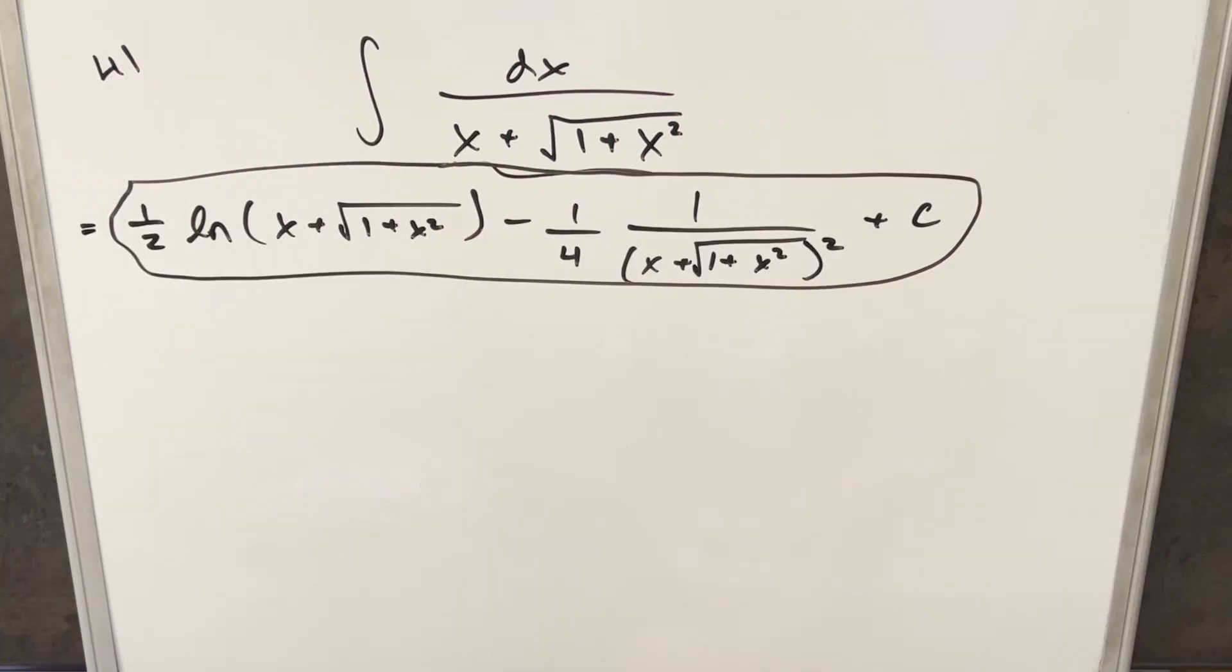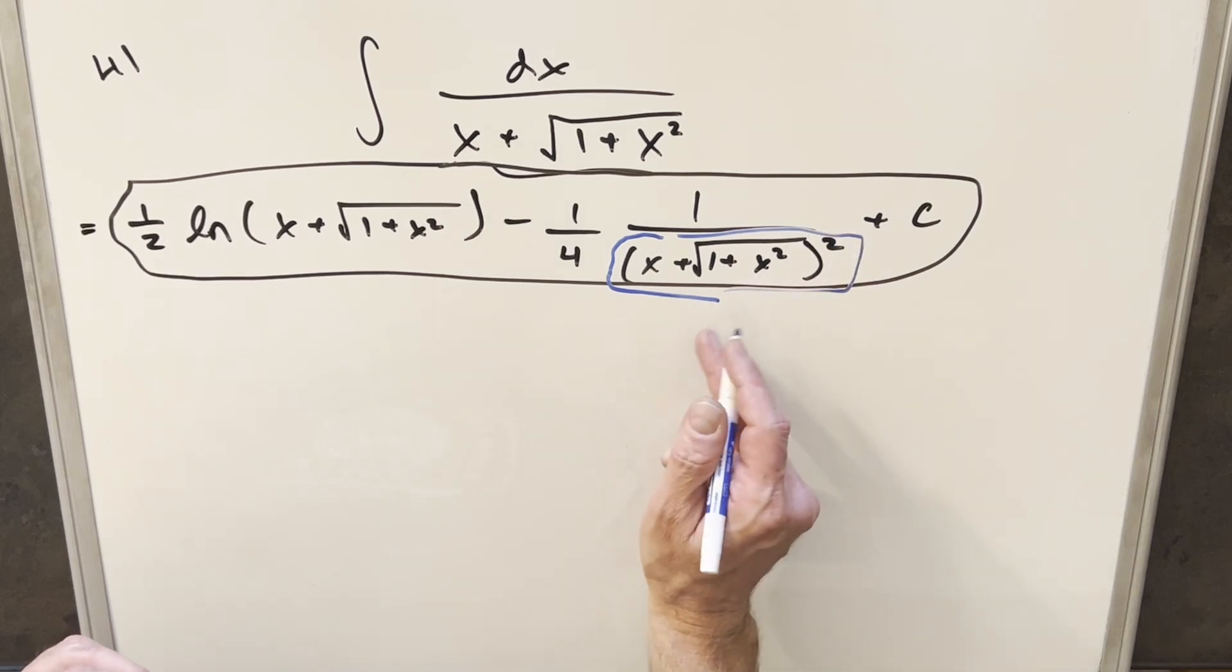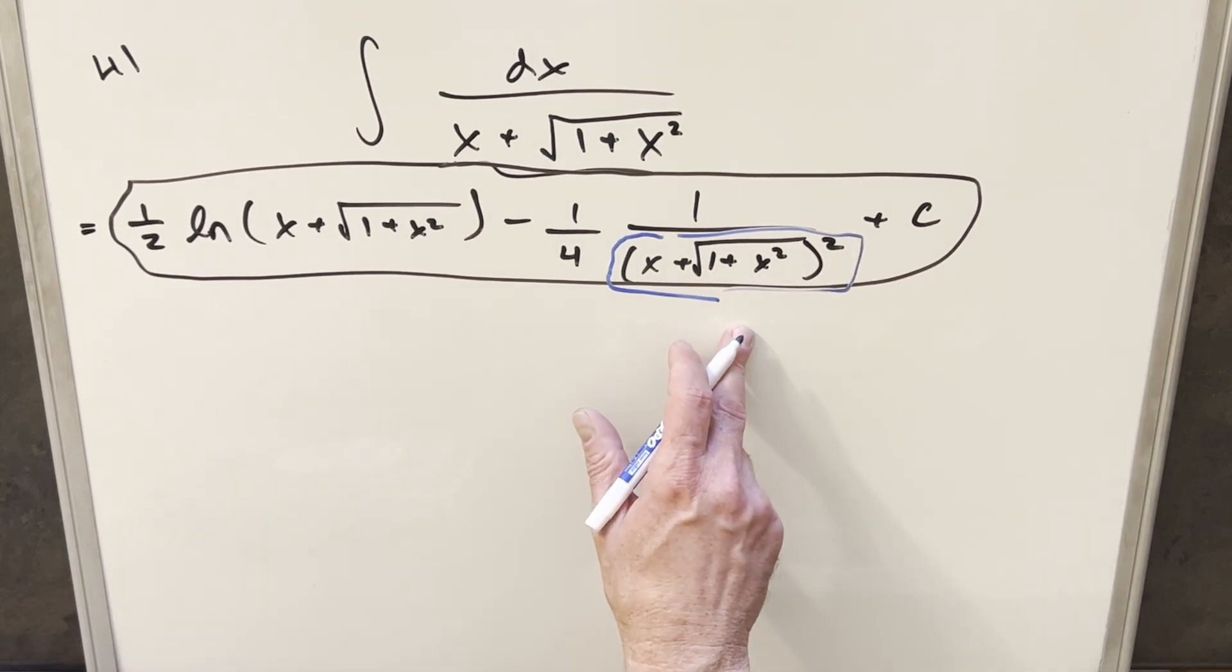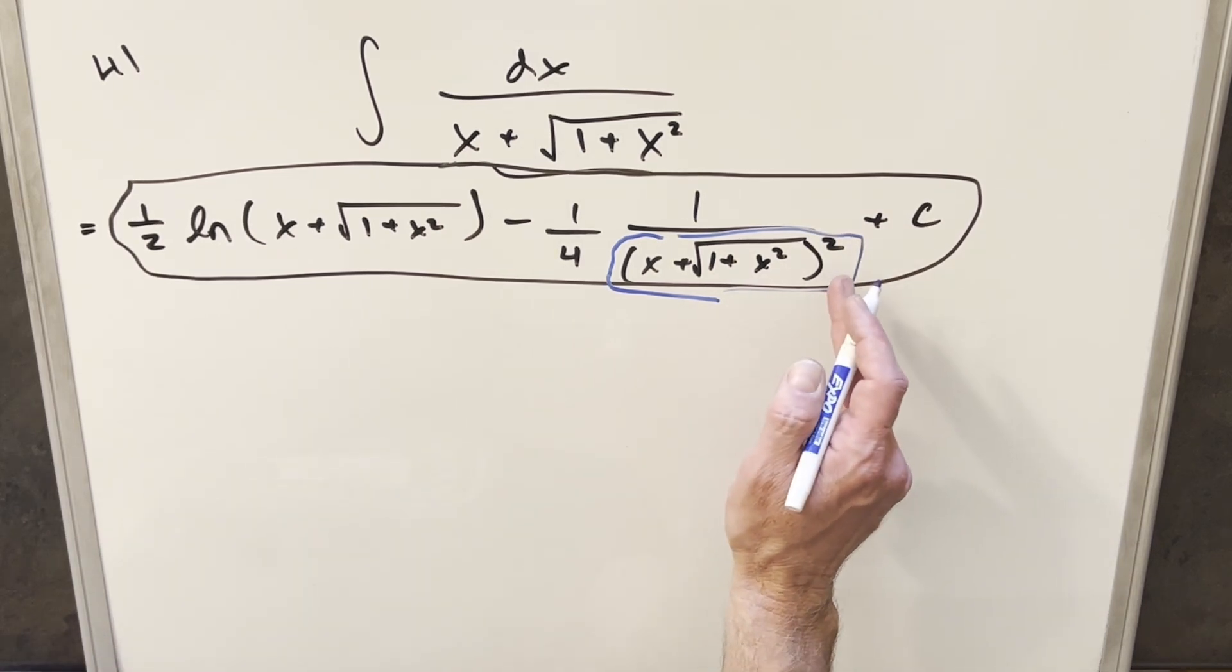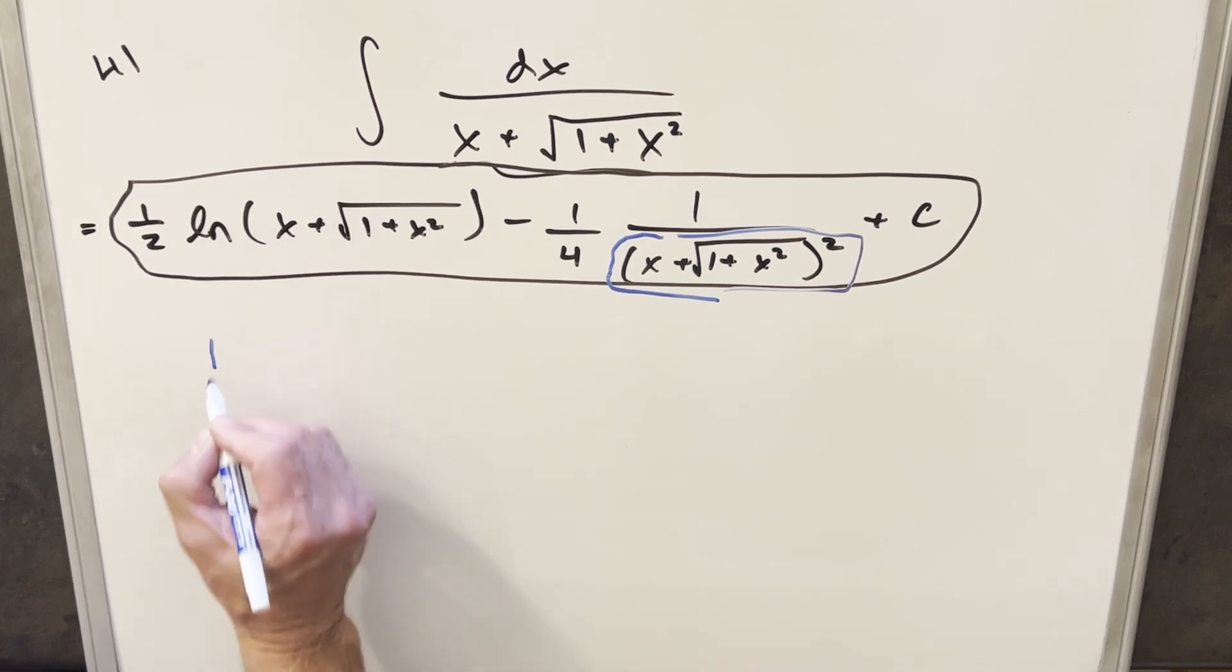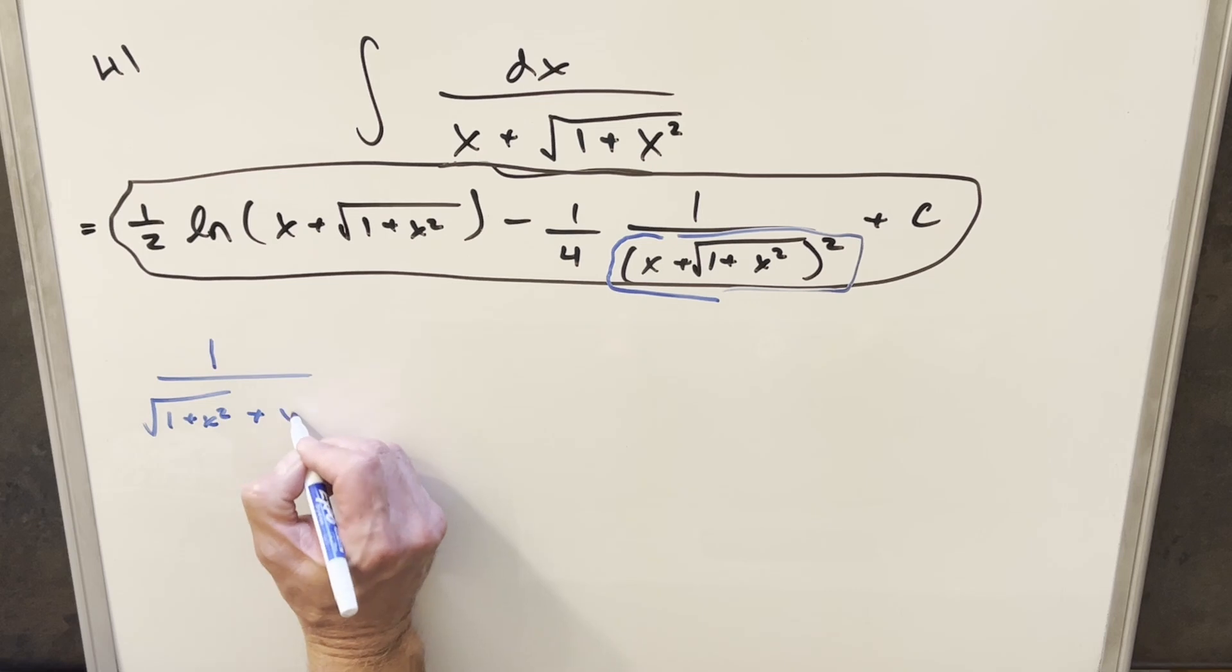What I want to do to try to clean this up is I really just want to focus on this piece. I'm not too worried about the rest of this stuff. So focusing on this, where we can really get some simplification here is by multiplying by the conjugate. So instead of looking at the square, let's just look at one copy of this. We'll rearrange it a little bit. I'm going to write it like square root 1 plus x squared plus x.